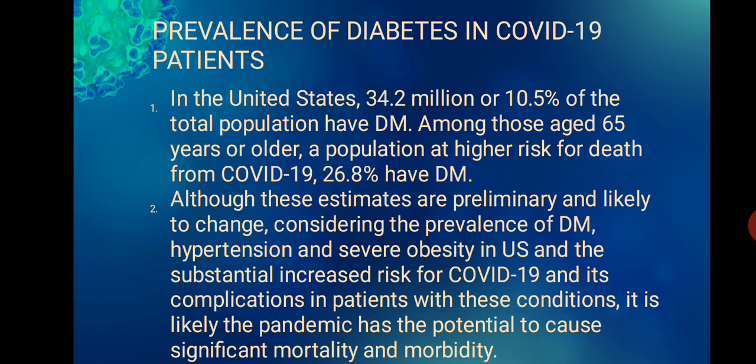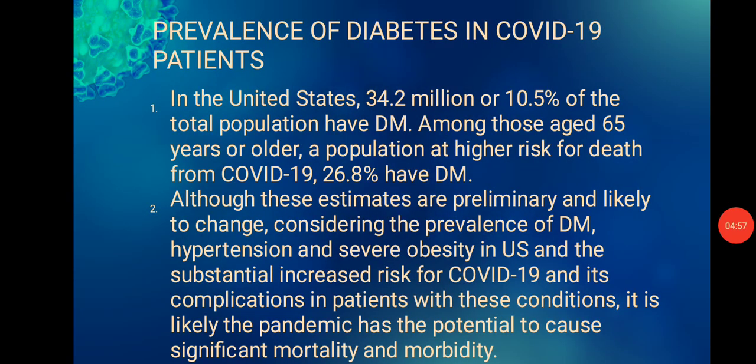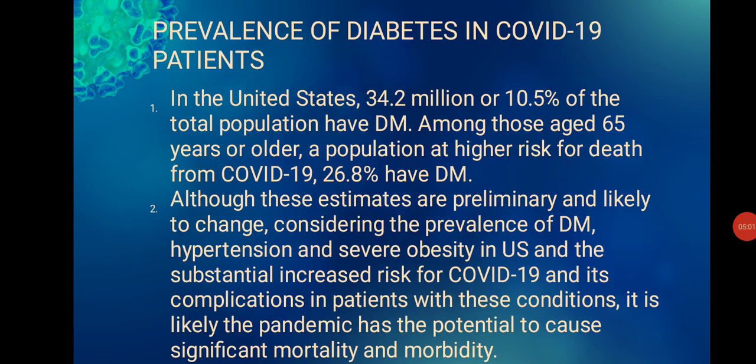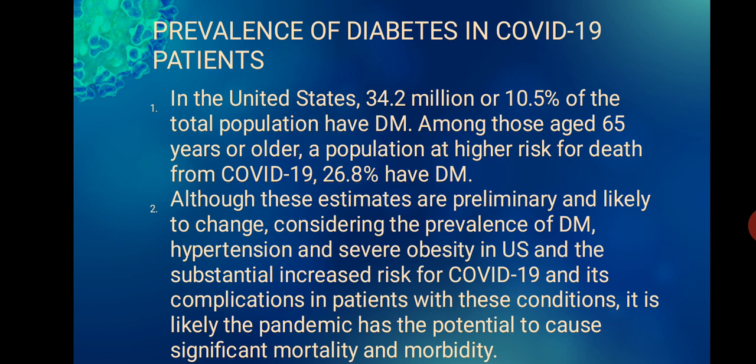Regarding the prevalence of diabetes among COVID-19 patients in the United States: 34.2 million, or 10.5% of the total population, have diabetes mellitus. Among those aged 65 years or older — a population at higher risk for death from COVID-19 — 26.8% have diabetes mellitus. Considering the prevalence of diabetes mellitus, hypertension, and severe obesity in the U.S. and the substantially increased risk for COVID-19 complications in these patients, the pandemic has the potential to cause significant mortality and morbidity.